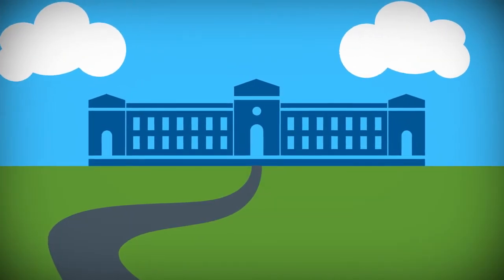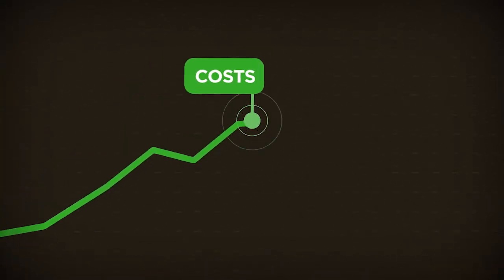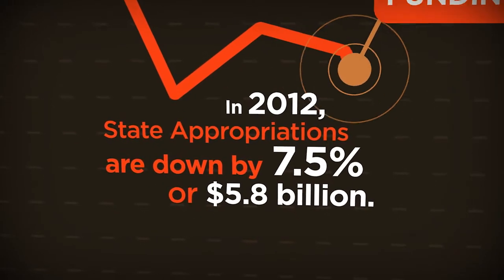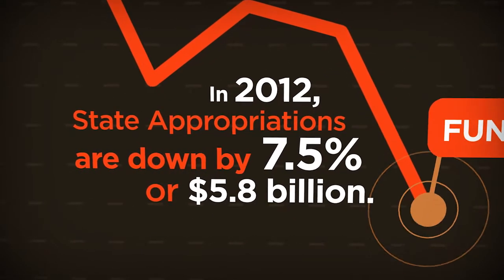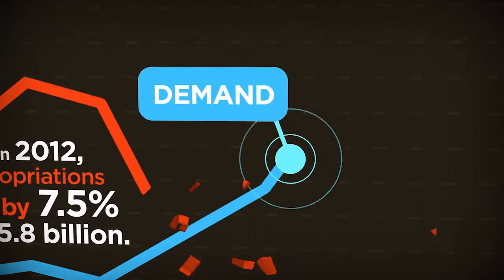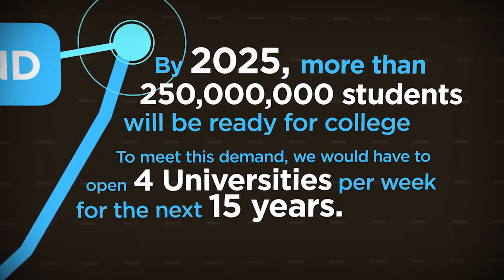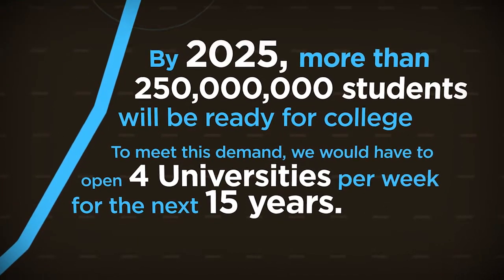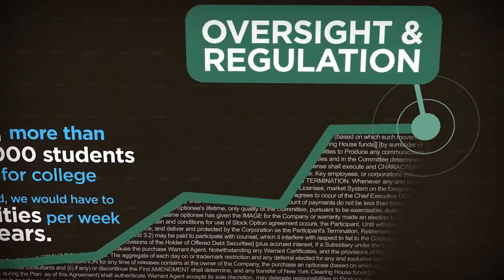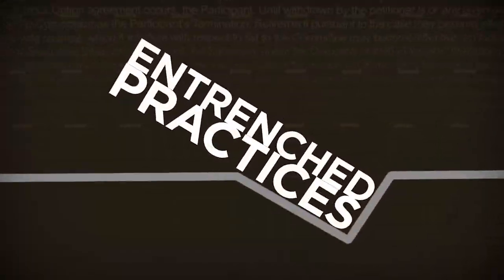Educational institutions have their own roadblocks: escalating costs, decreased funding, rising demand, increased oversight and regulation, entrenched practices.